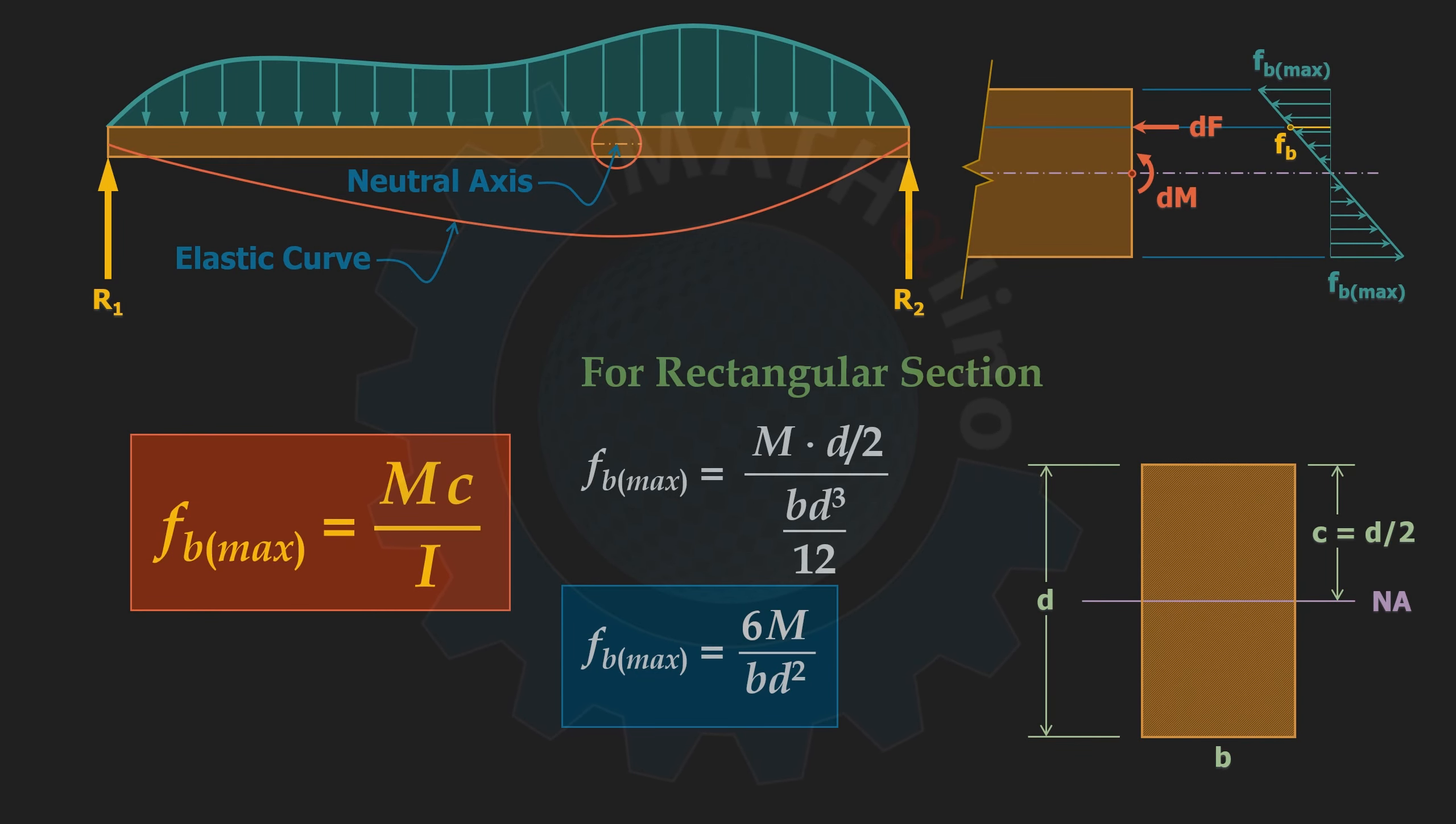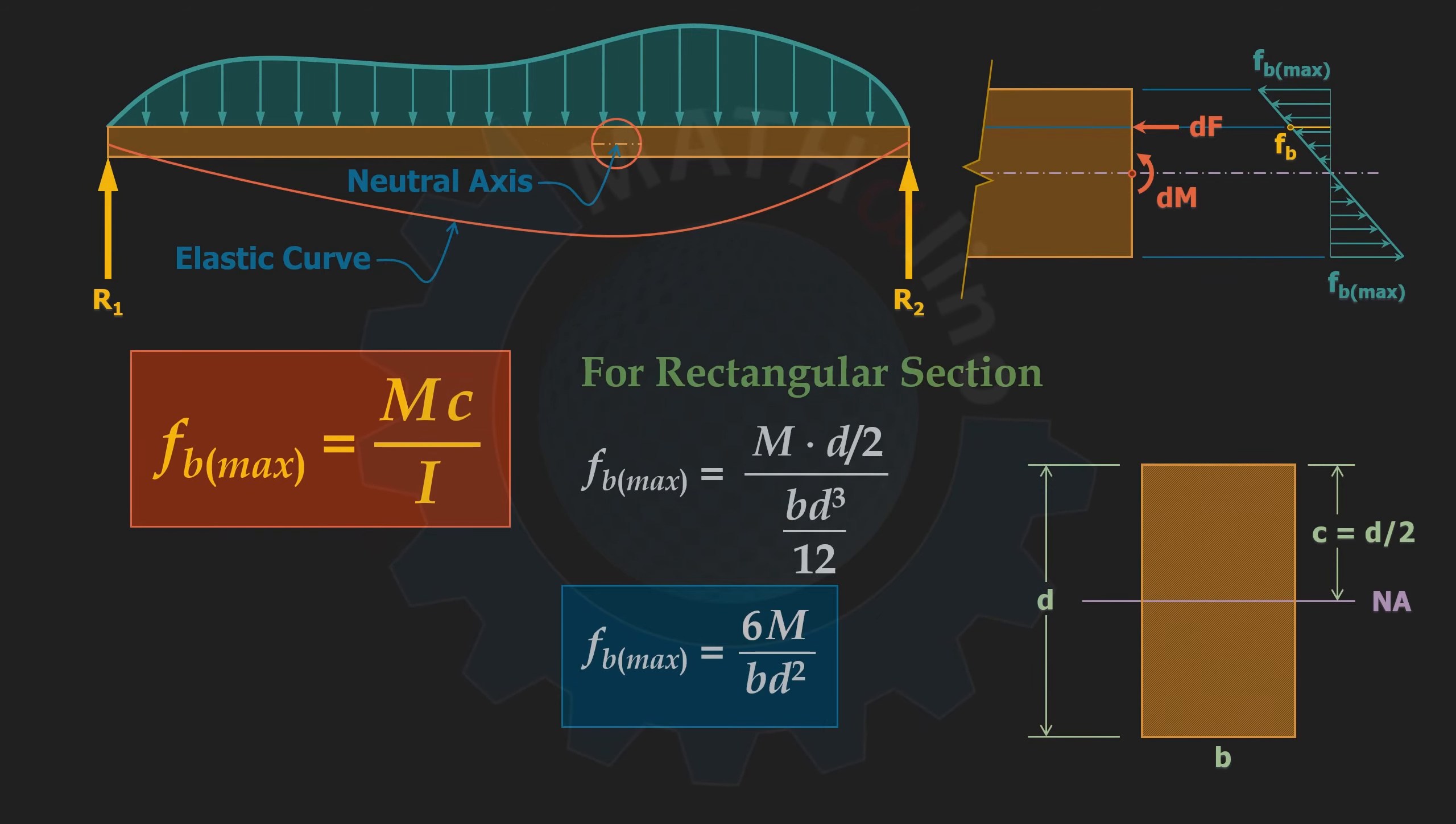When it comes to steel, engineers often use section modulus instead of moment of inertia. The reason of this is pretty obvious when you see that the modulus of the section is equal to I over c. The larger the S, the more resistant is the material for bending.